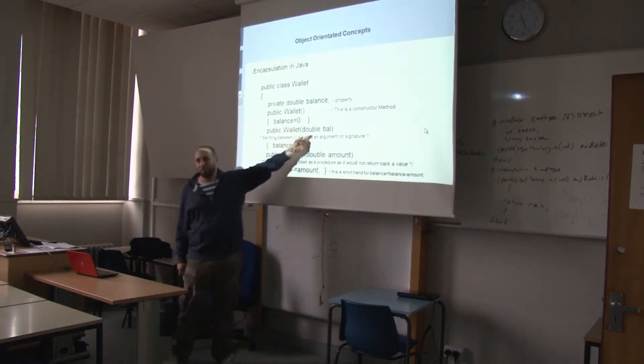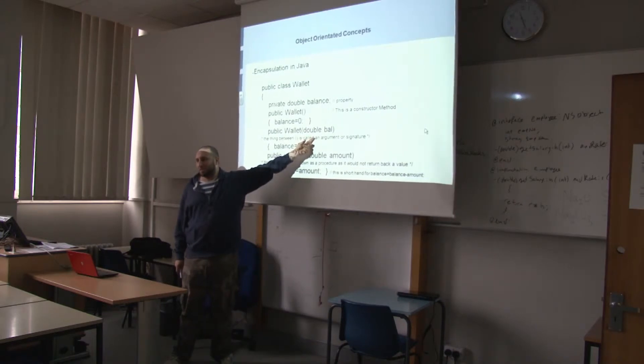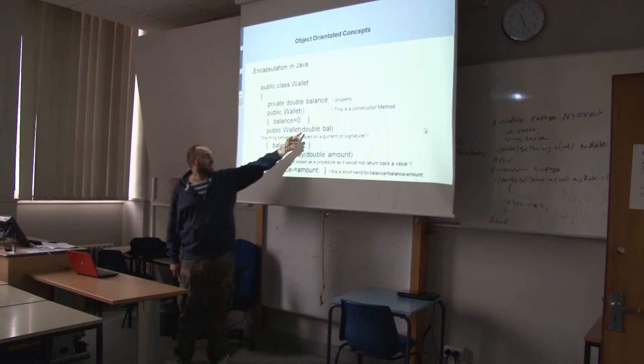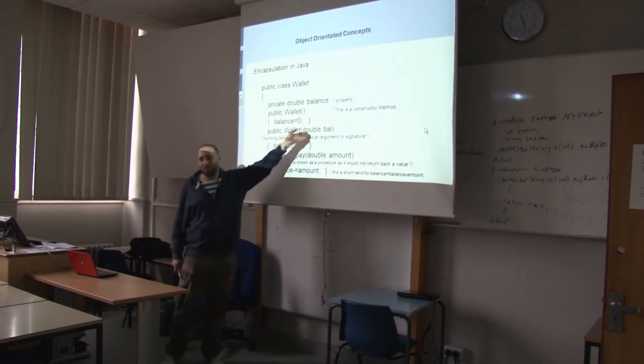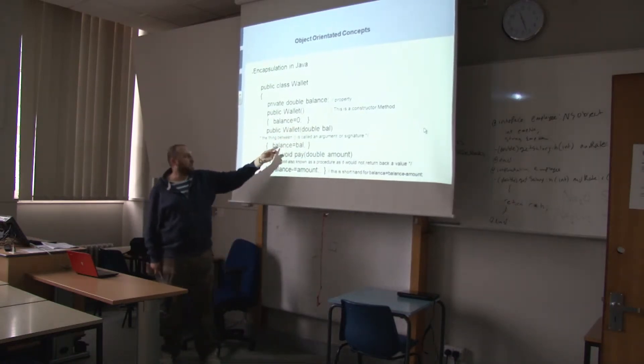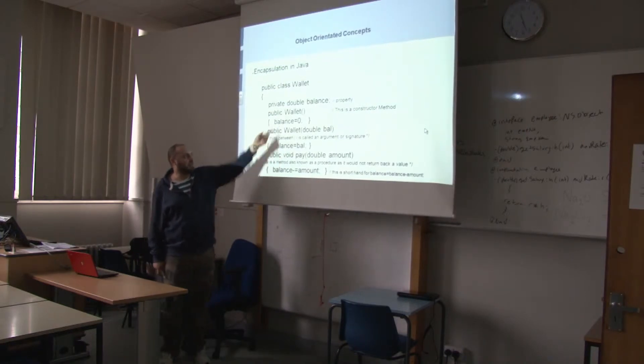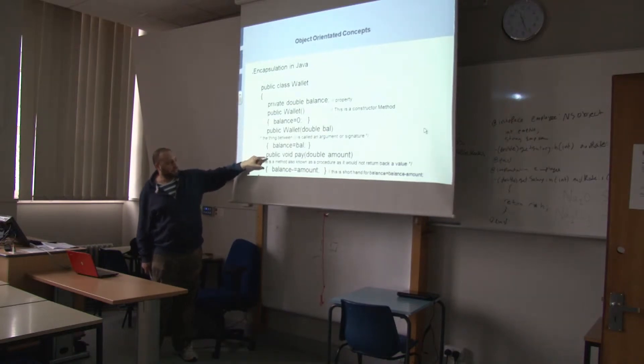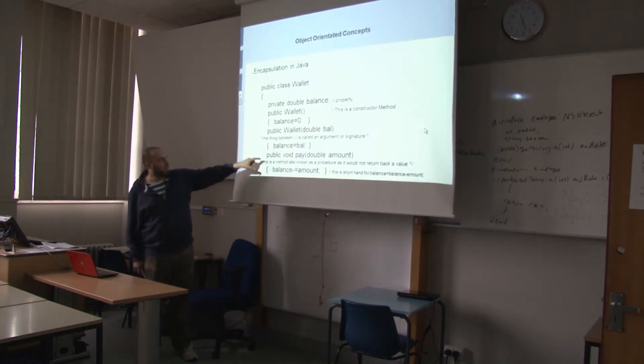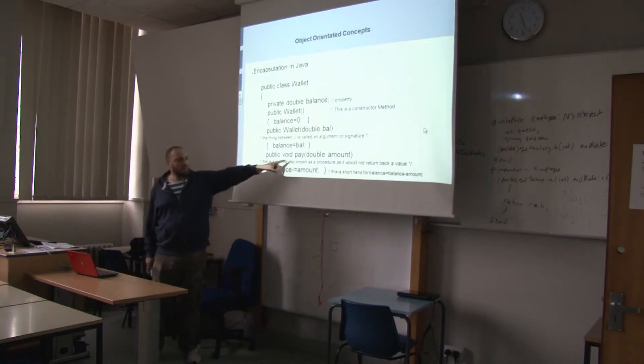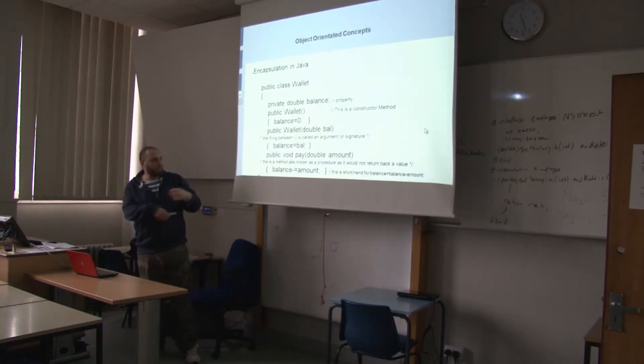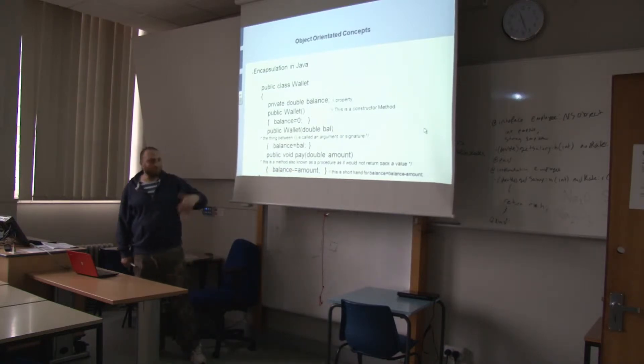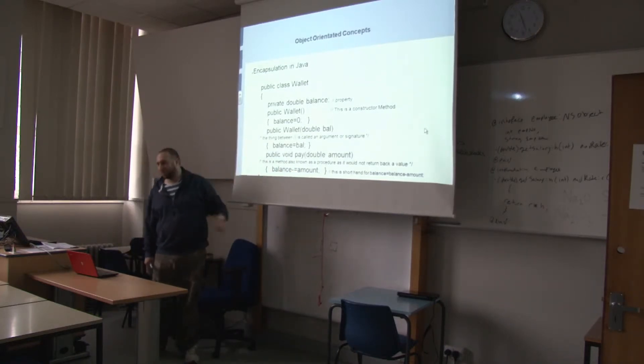We've also got another constructor. But this time, I know Imran, you were asking what's an argument. So this is an argument here. You've got double balance. So basically it's taking a value here and then it's going to assign that value into the balance. That one sets it to zero and that one's passing the value into it. And the only method that is going to do that, the function of this wallet object, is pay. So every time you pay something, it's going to deduct the amount that you're going to pay from the balance. So the balance is always going to go down every time you make a payment. Very simple.